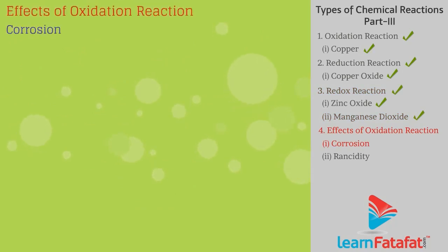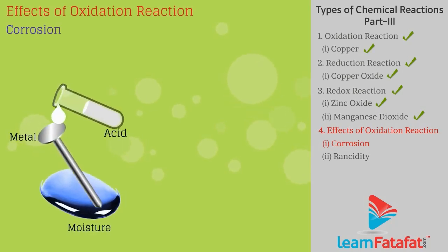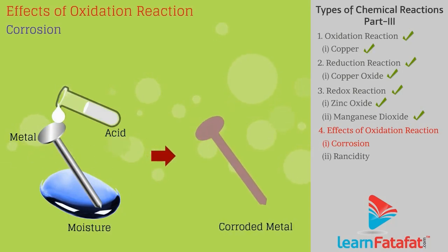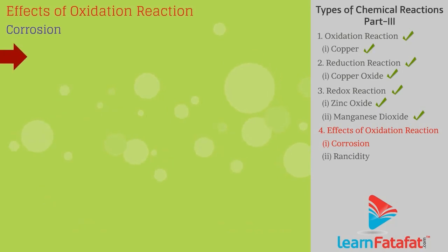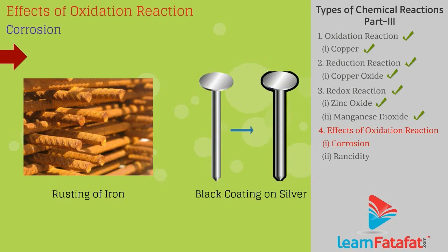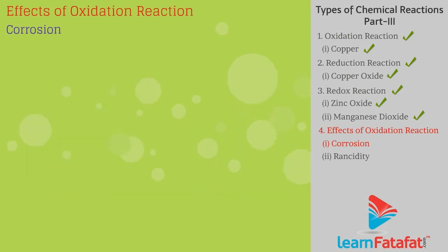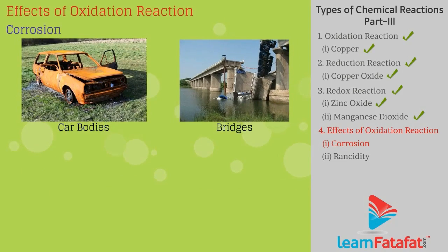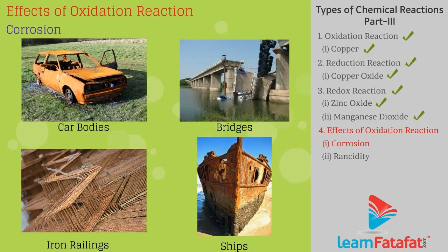Effects of oxidation reactions in everyday life. First — corrosion: When a metal is attacked by moisture, acids, etc., it is said to be corroded and the process is called corrosion. Examples include rusting of iron and black coating on silver. Corrosion damages car bodies, bridges, iron railings, ships, and other metal materials, especially those made of iron.